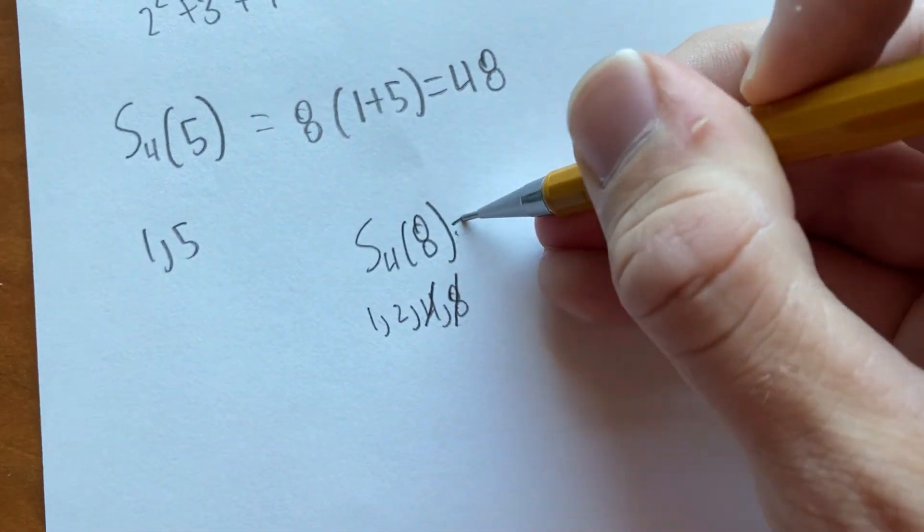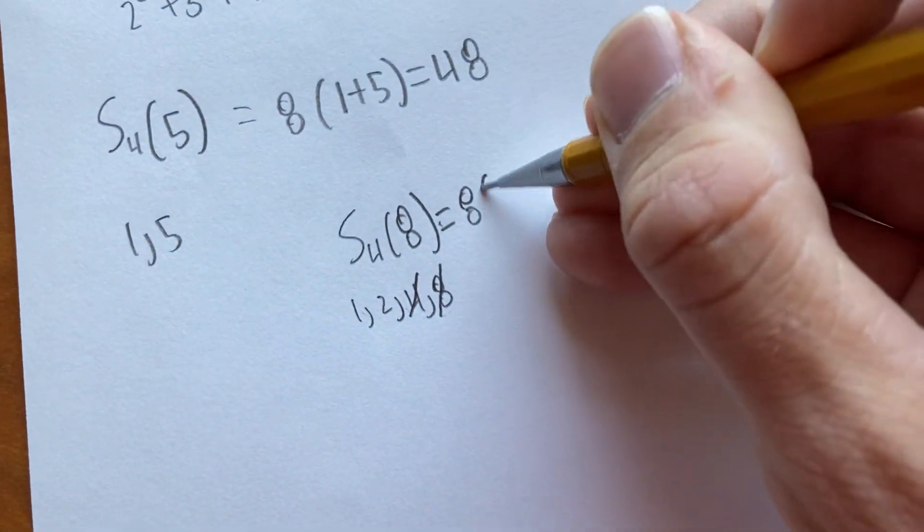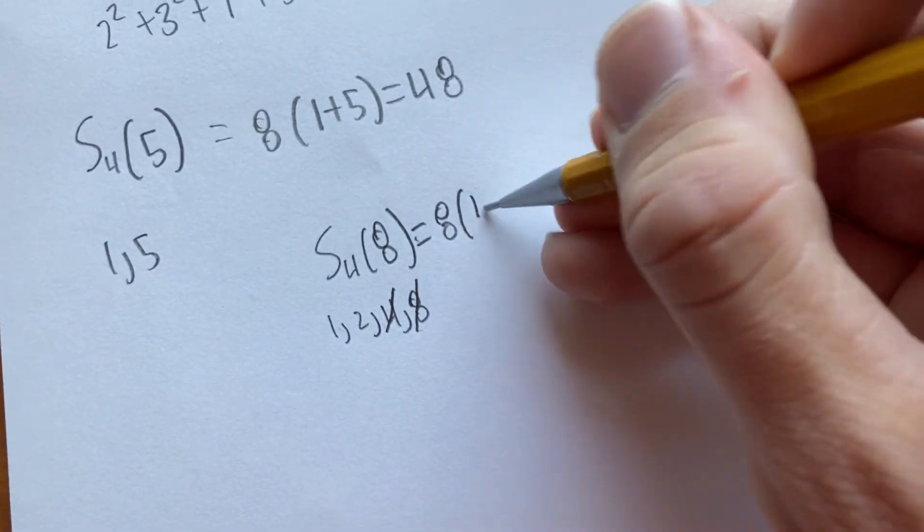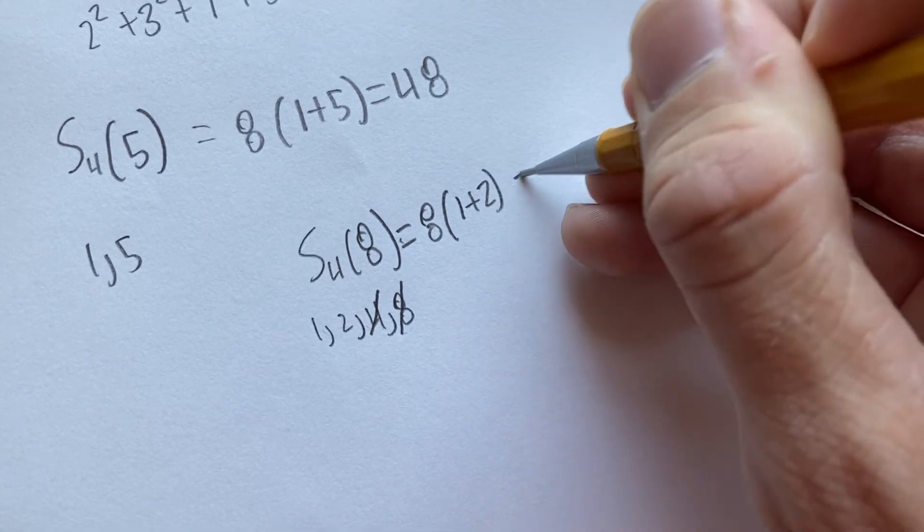So it's just one and two. So our formula is just, remember, we take eight and then we take these two divisors and add them up. And it's just eight times one plus two, which is 24.